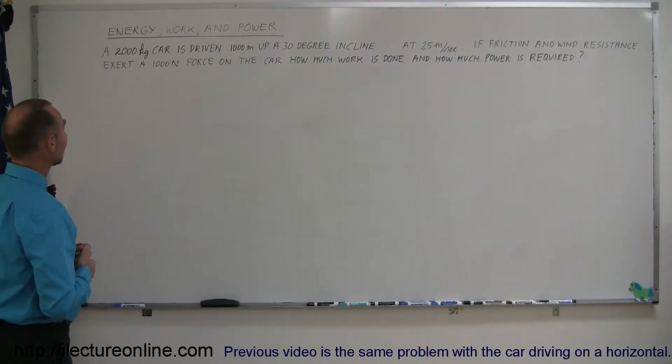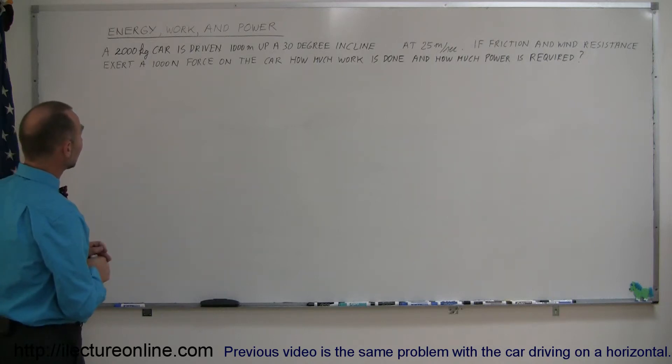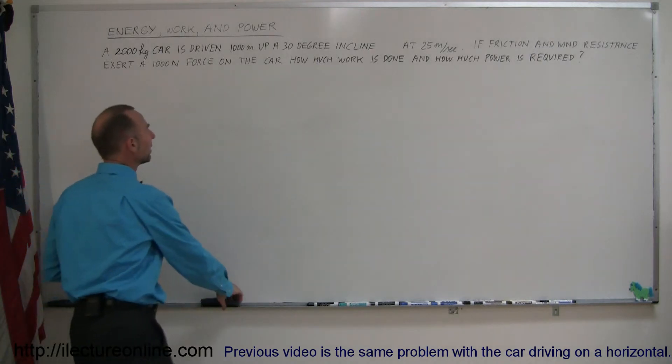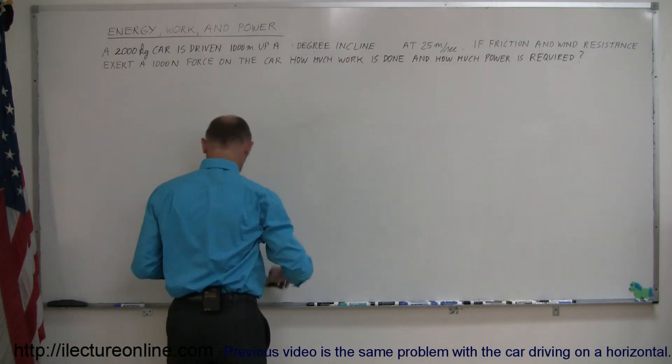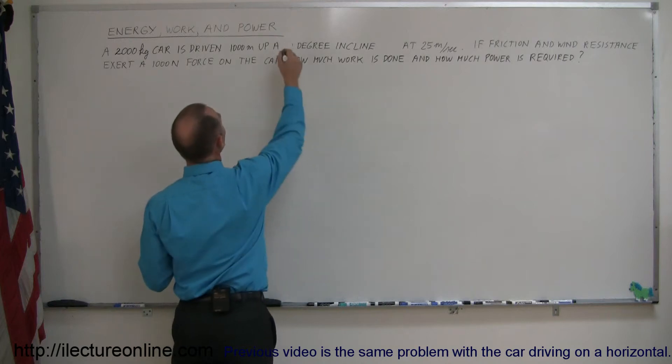Here's a nice example on a physics problem dealing with work and power. The problem says a 2,000 kilogram car is driven 1,000 meters up a 30 degree incline. I'm thinking about it - 30 degrees is a little much. Let's make it 10 degrees.